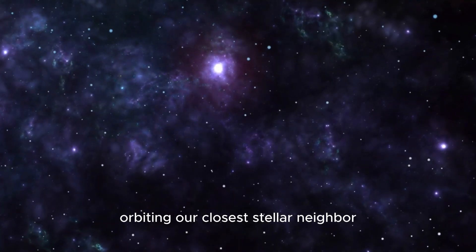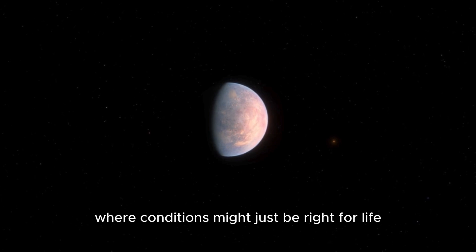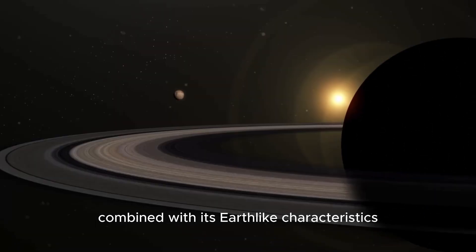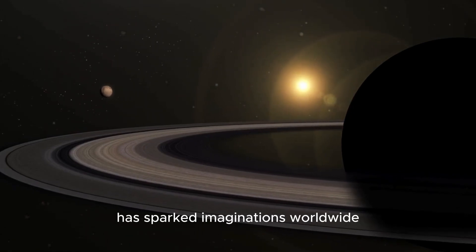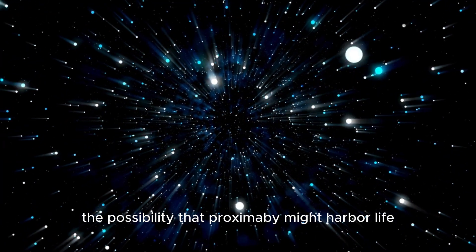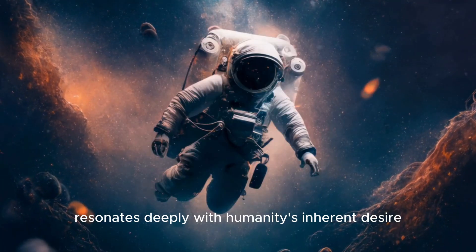This nearby exoplanet, orbiting our closest stellar neighbor Proxima Centauri, lies in the habitable zone, where conditions might just be right for life. Its proximity, combined with its Earth-like characteristics, has sparked imaginations worldwide. The possibility that Proxima b might harbor life or at least Earth-like conditions resonates deeply with humanity's inherent desire to explore, discover, and ultimately find a place beyond our planet to call home.